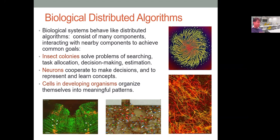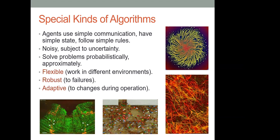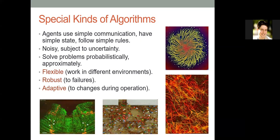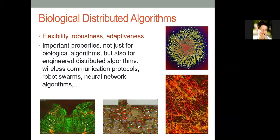Cells in developing organisms organize themselves into meaningful patterns. These are special kinds of distributed algorithms in that the agents use very simple communication, have simple state, and follow simple rules. However, these systems are noisy and subject to a great deal of uncertainty, so they can only solve problems approximately and probabilistically. What you get from this is algorithms that are flexible, robust to failures, and adaptive — important properties also for engineered distributed algorithms, especially wireless communication protocols, robot swarms, and neural network algorithms for machine learning.